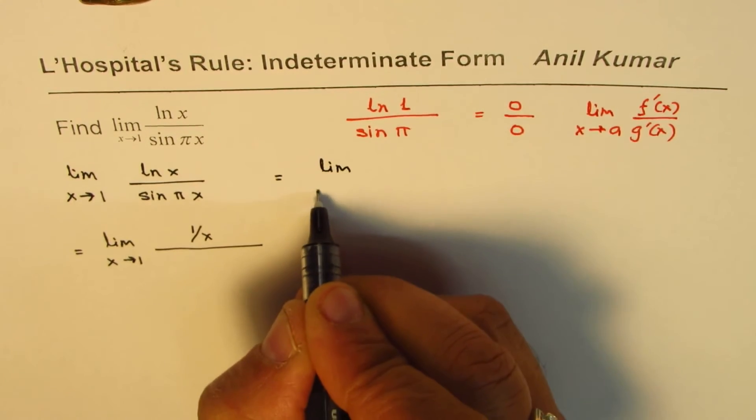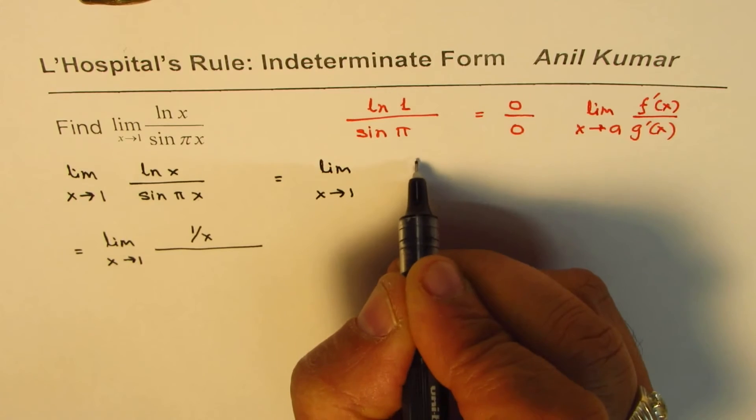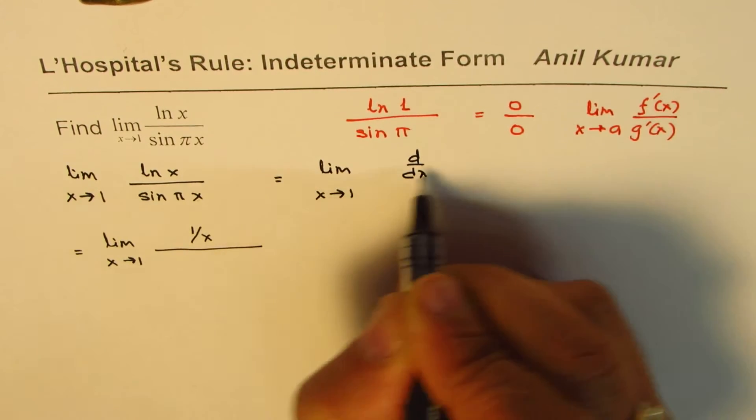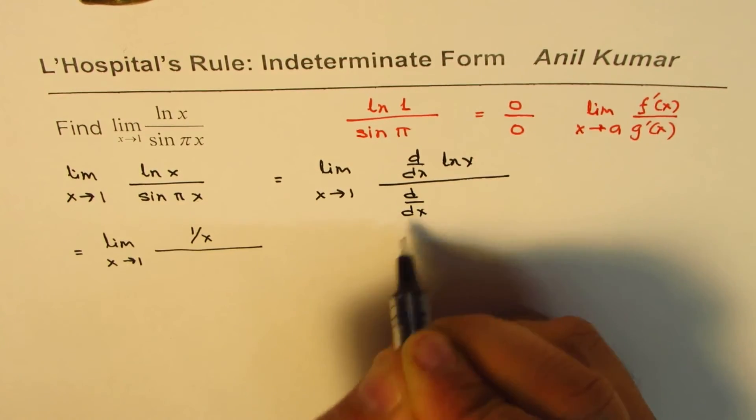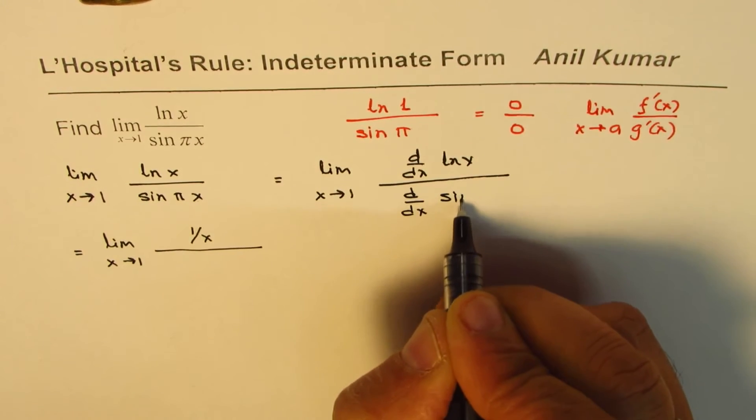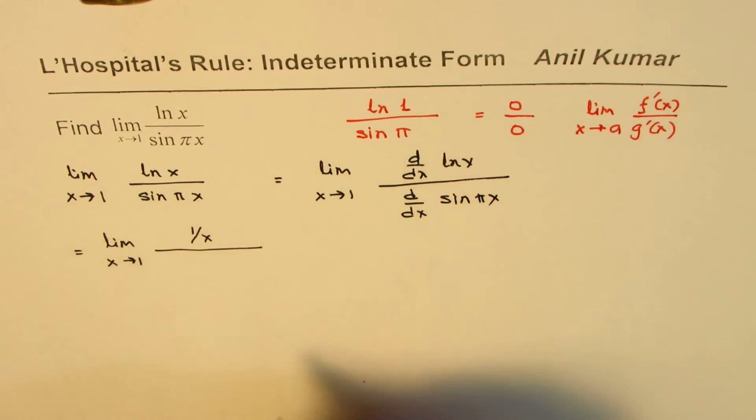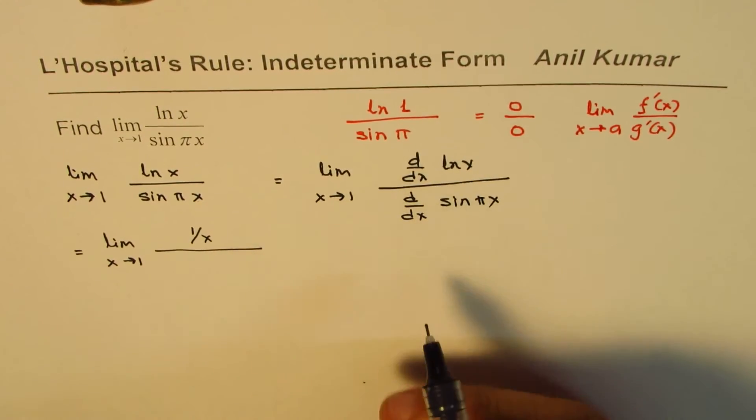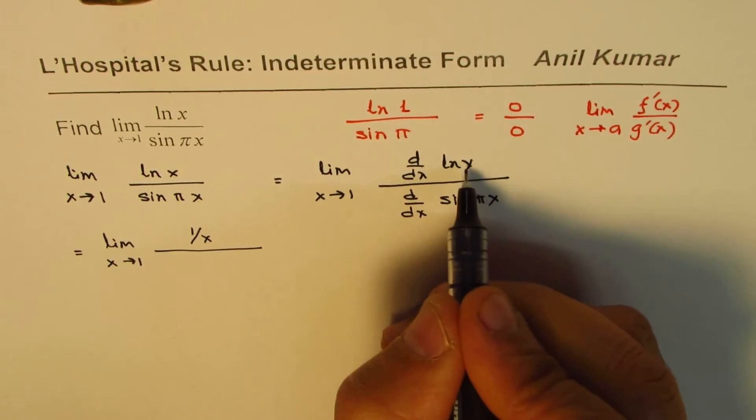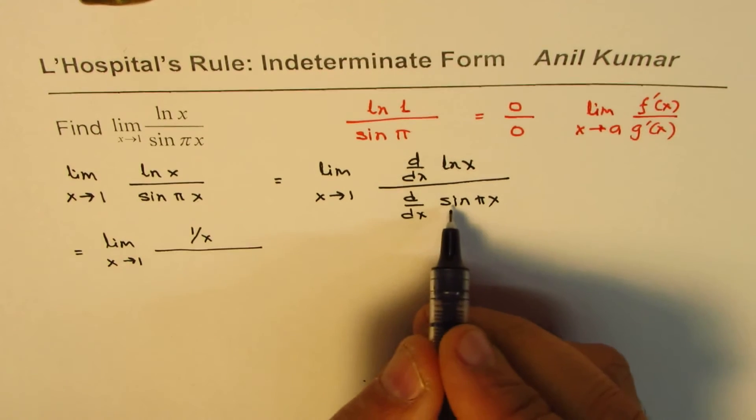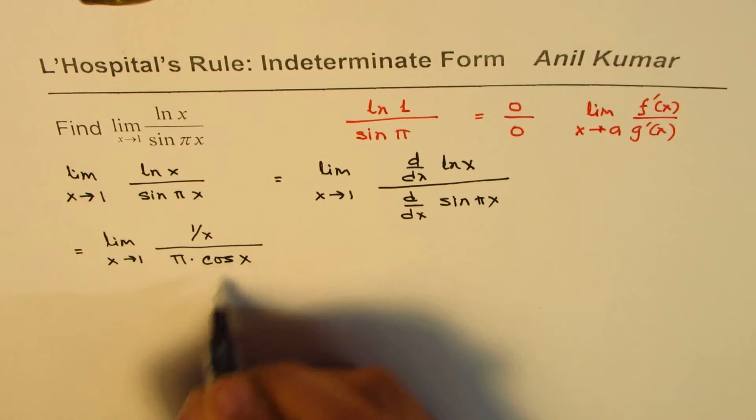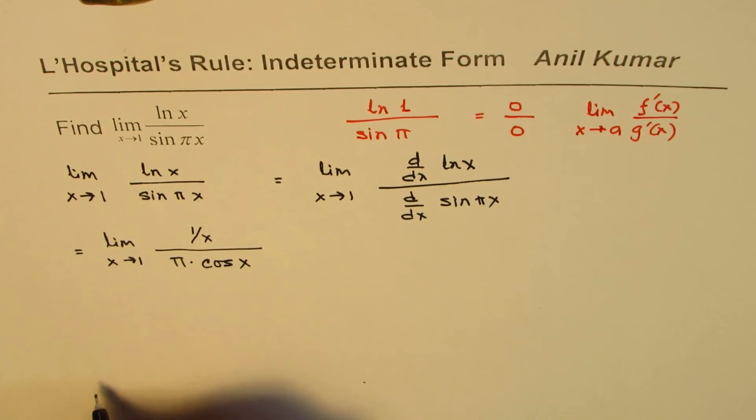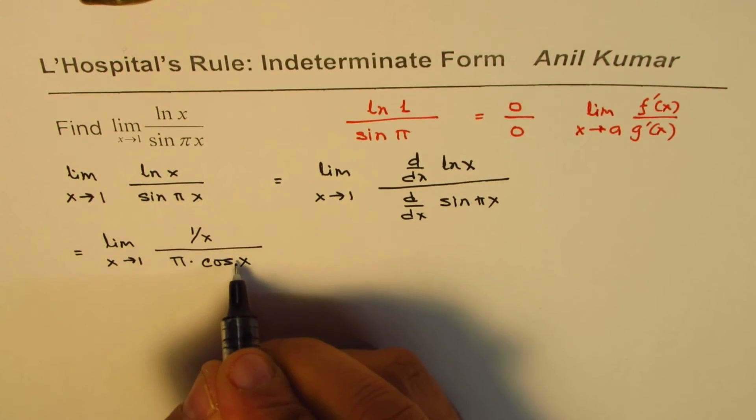we have limit x approaches 1, derivative d/dx of ln x divided by derivative of sine π x. So that is the rule: ratio of their derivatives. Derivative of ln x is 1 over x. For sine π x, it's π times cos π x.